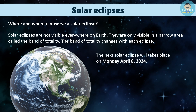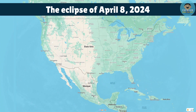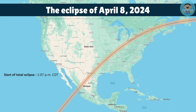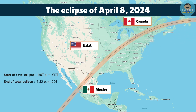The next solar eclipse will take place on Monday, April 8, 2024. It will be a total eclipse, visible from North America. Here is the totality band of the eclipse. The eclipse will take place across several time zones; we will use CDT as our reference. The start of the total eclipse is expected at 1:07 p.m. CDT. The eclipse will cross Mexico, the United States, and Canada. The end of the total eclipse is expected at 2:52 p.m. CDT. The duration of totality is 4 minutes and 30 seconds, and the width of the totality band is approximately 250 kilometers.